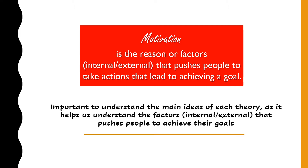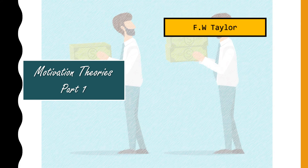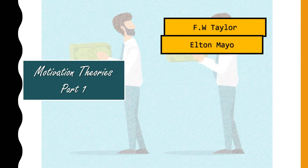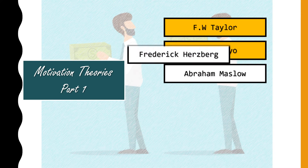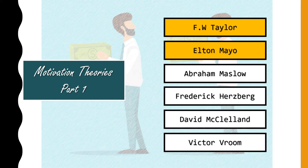Let's look at all the famous people who have done research about motivation that we'll be covering in this video and upcoming ones. We'll be looking at Frederick Winslow Taylor, Elton Mayo, Abraham Maslow, Frederick Herzberg, David McClelland, and Victor Vroom. It's quite a heavy chapter with six important researchers. For this video, we're going to cover the first two: F.W. Taylor and Elton Mayo.